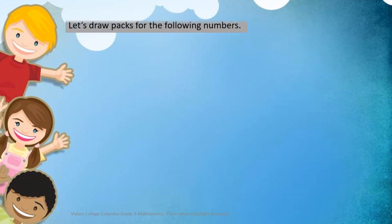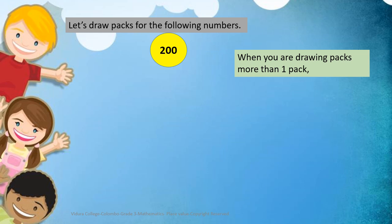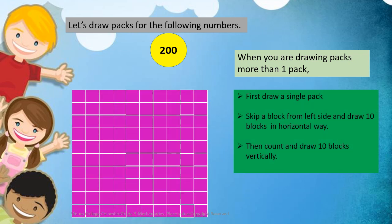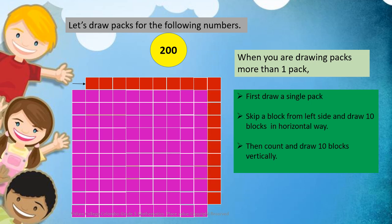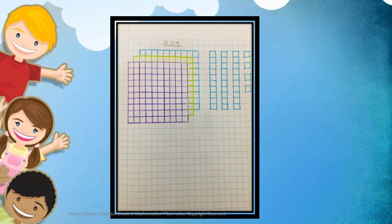Let's draw packs for the number 200. When you are drawing more than one pack, remember: first draw a single pack. Now you all know how to draw a pack. Then skip a block from the left side and draw 10 blocks in a horizontal way, then count and draw 10 blocks vertically. You can outline the packs with different colors. Here is an example of how to draw packs, rods and blocks in your maths writing book.